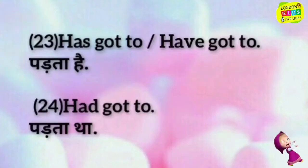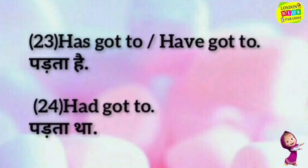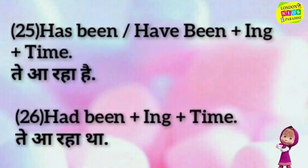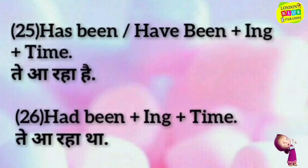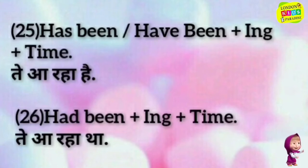Has got to — pardhata hai. Had got to — pardhata tha. Has been / have been plus '-ing' plus time — teh hai hai hai. Had been plus '-ing' plus time — teh hai hai hai.